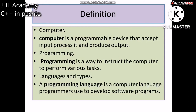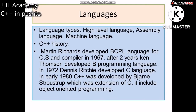A programming language is a computer language that programmers use to develop software programs. We have three different types of languages: high-level language, assembly language, and machine-level language.